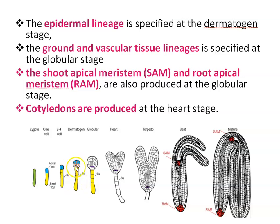I can see here the apical part of the embryo and this is the suspensor. The ground and the vascular tissue lineages are specified at the globular stage of the embryo. At the globular stage, the shoot apical meristem and the root apical meristem are also produced. So at the globular stage, ground and vascular tissue lineages as well as shoot apical meristem and root apical meristem are all produced.